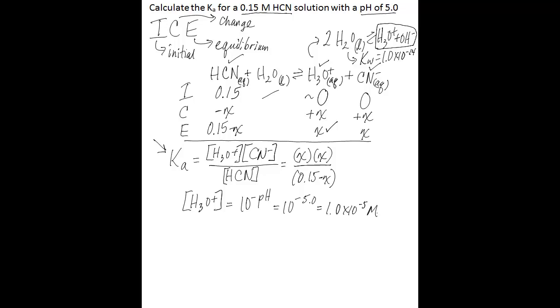So now that we know X, because this is also equal to X, we know also the cyanide ion concentration. And we can find the hydrocyanic acid concentration, because we know that's equal to 0.15 minus X. So 0.15 minus 1.0 times 10 to the negative 5. And we'll substitute this all into our equation.